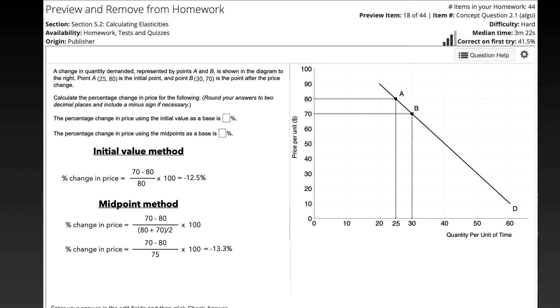We can use the initial method, which divides by the initial value of the particular concept that we are calculating here. It's a percent change in the price. Or we can use the midpoint method, which means we look at the price at A and at B, add them together and divide by 2, and that is what we divide the numerator by.